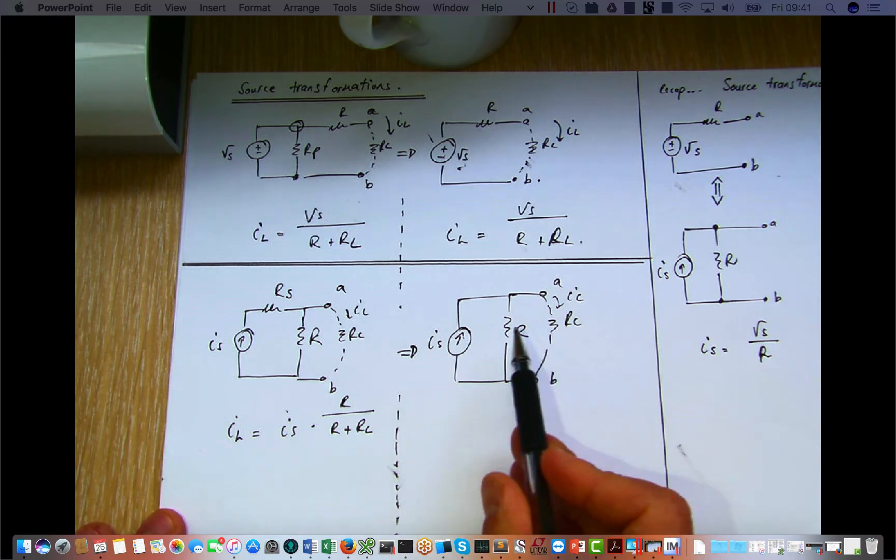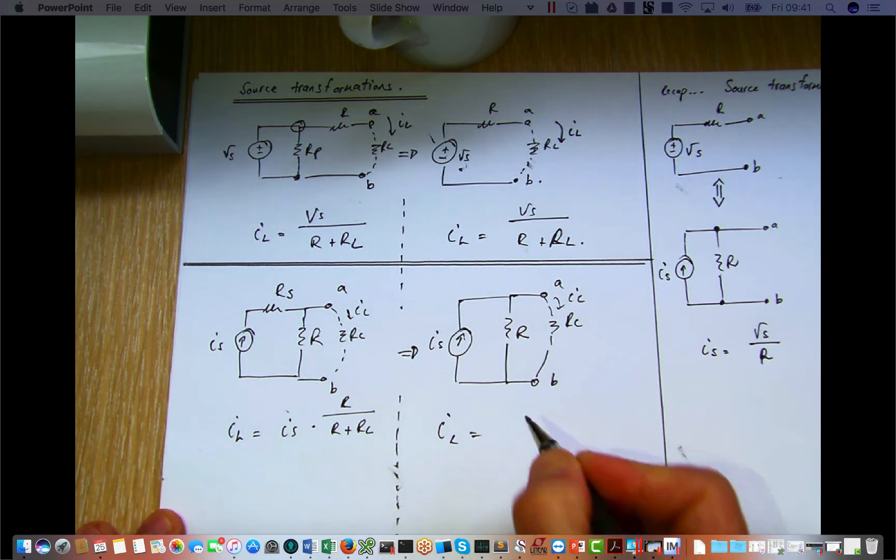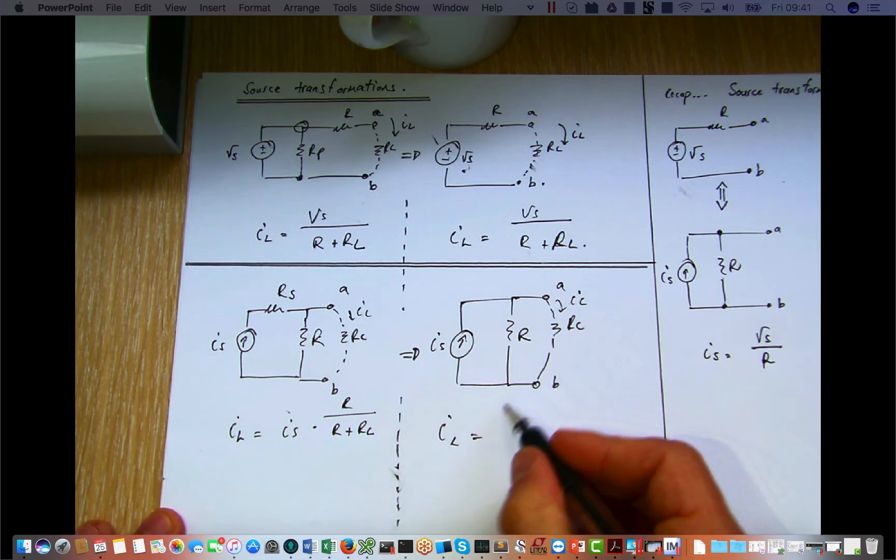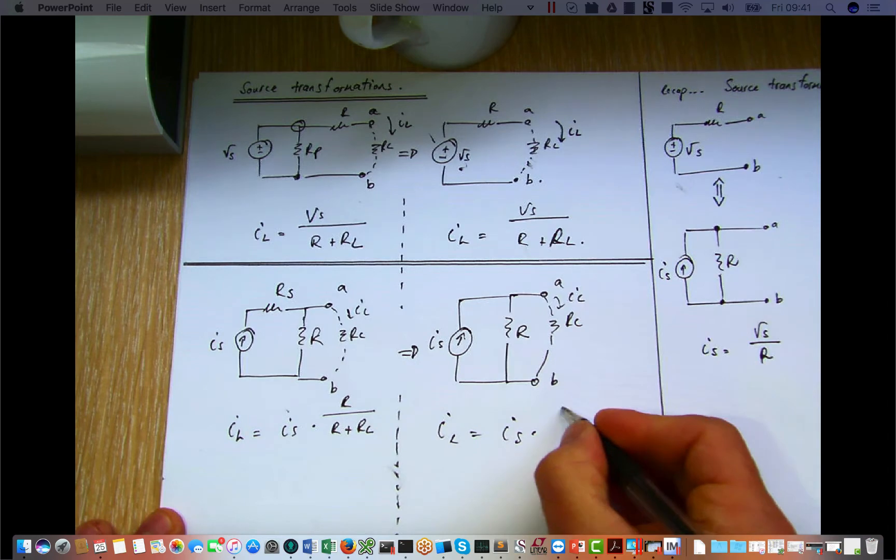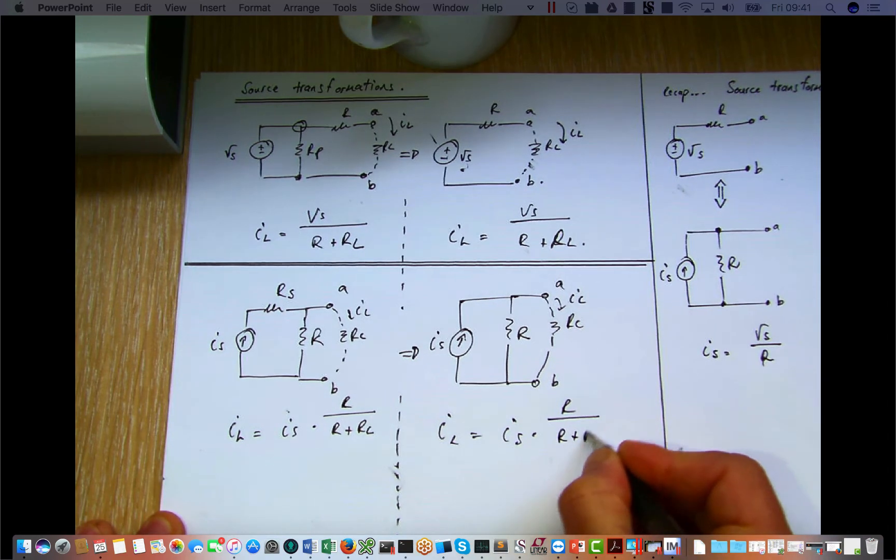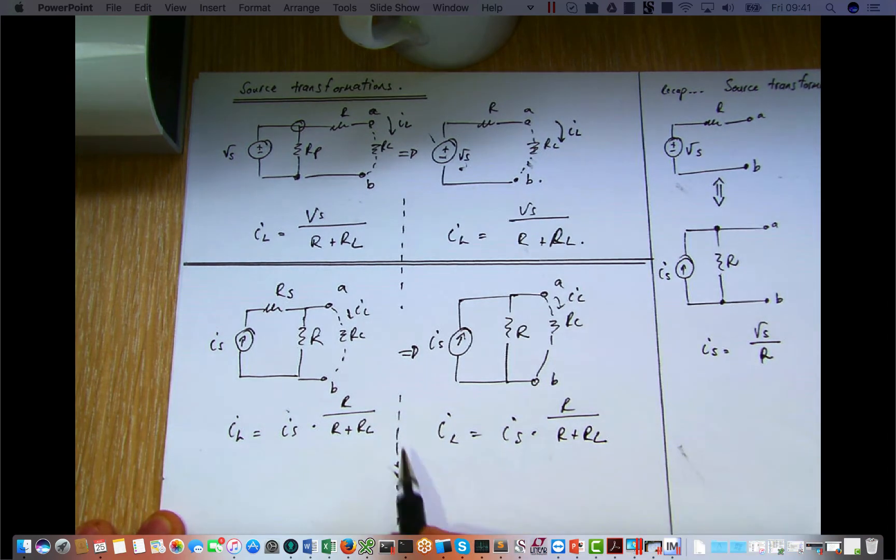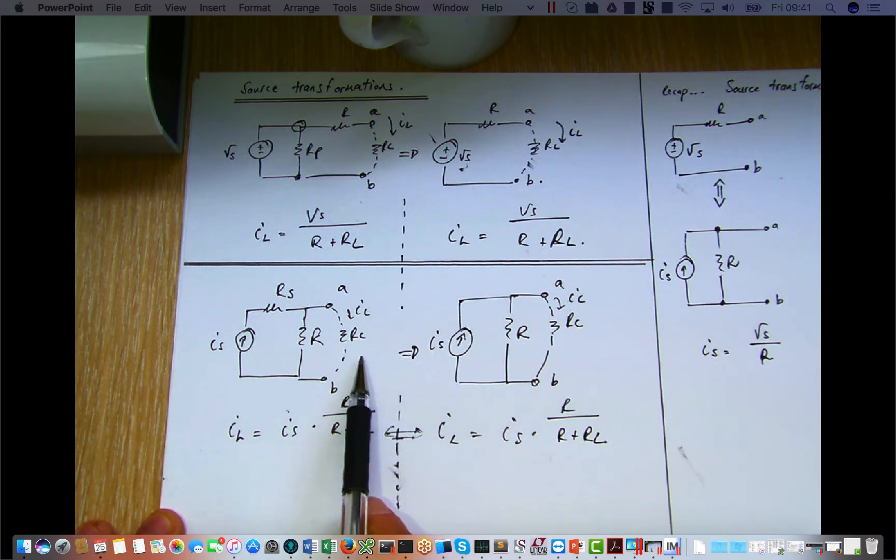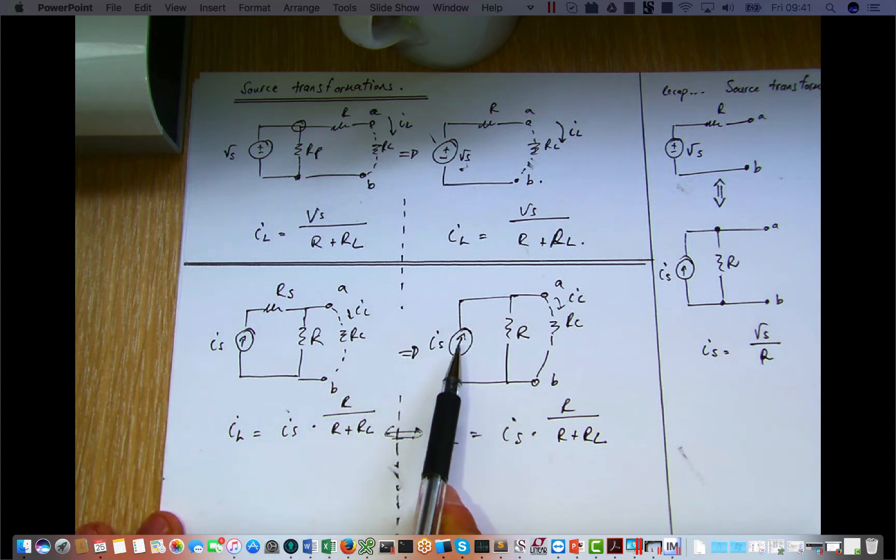What is the current flowing through the load resistor in this case? Well, we have IL is equal to same thing, IS times R over R plus RL. And as we can see, these two are equal. So again, we've now proven that this form is equivalent to this form over here.